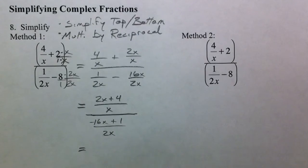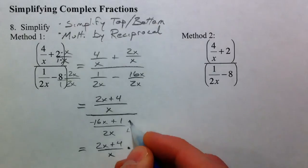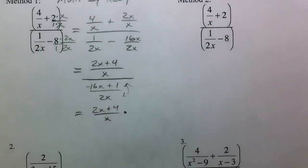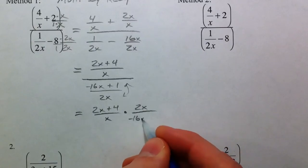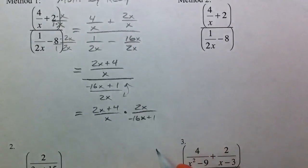And so then what we do is we flip and multiply by the reciprocal. 2x plus 4 over x times the reciprocal of the bottom, and so we have 2x over negative 16x plus 1. Here's when we go back to last section. We've got common factors on top and on bottom that cancel out, and then we have 2 times 2x plus 4, which is 4x plus 8.